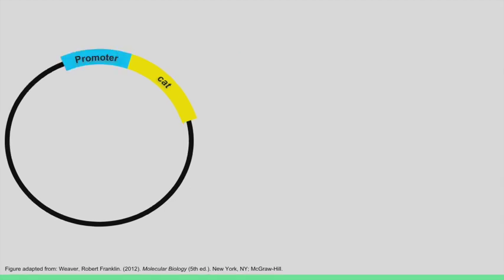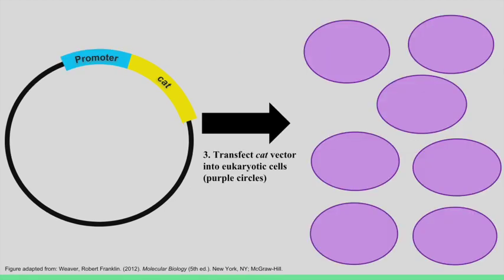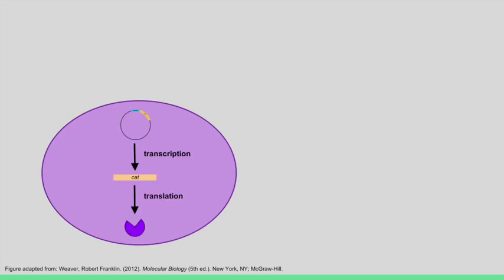Now we are ready to put this construct into eukaryotic cells. These cells are depicted by the purple circles. We will use a special method called transfection to insert our vector into the eukaryotic cells. After successfully transfecting the vector into the eukaryotic cells, they will transcribe and translate the gene to produce the CAT enzyme.